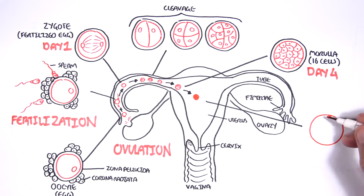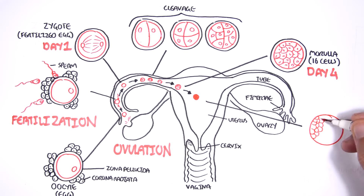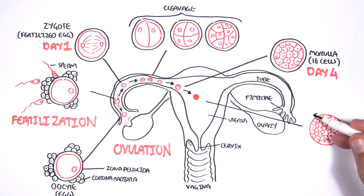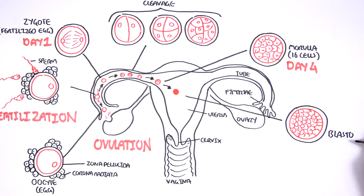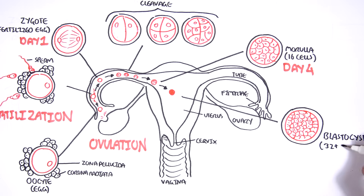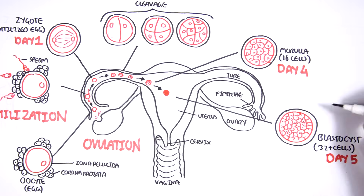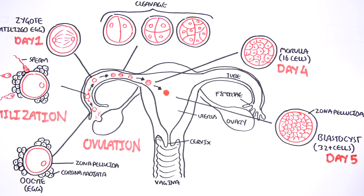This morula will divide again and form a blastocyst, which is a collection of 32 or more cells. These cells are essentially embryonic cells — all cells within the blastocyst are embryonic cells. The blastocyst is still surrounded by the zona pellucida.